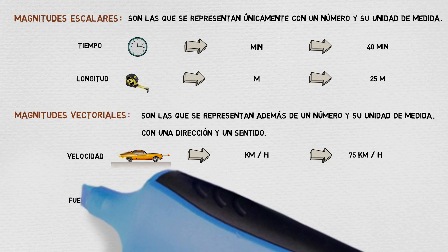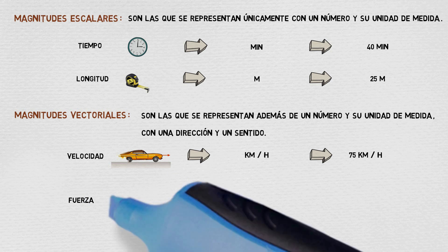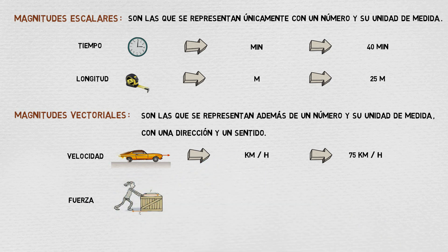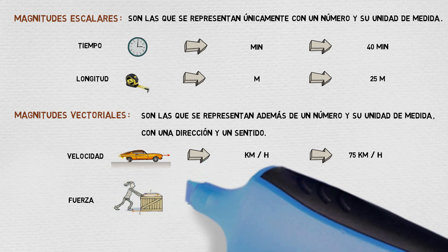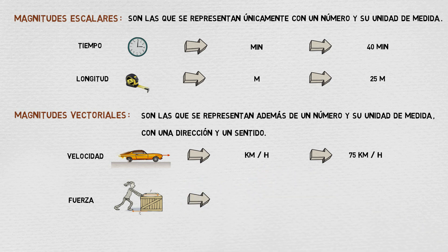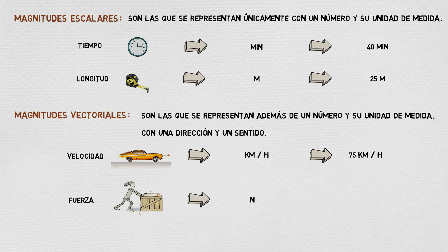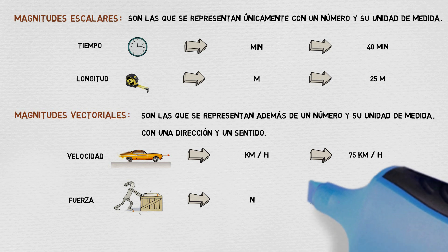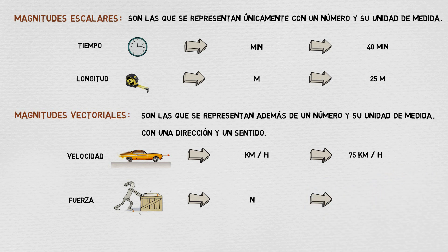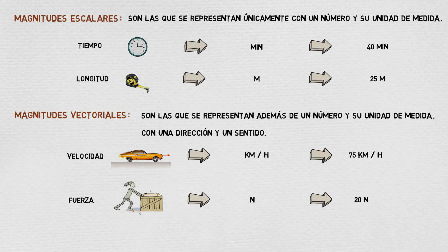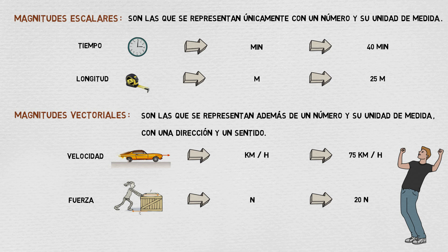Another example would be the force. The force applied on an object is measured in Newtons, which is the unit of measurement of force in the international system of units. For example, 20 Newtons. In addition to the force applied on an object, we also need to know if that force is applied to the top, to the bottom, to one side, to the other, or to the front or back.